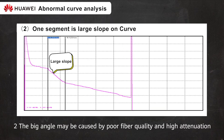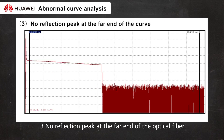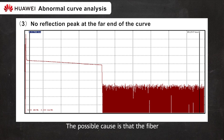2. The big angle may be caused by poor fiber quality and high attenuation, or the optical cable being too tight, or the optical cable fiber not being long enough. 3. No reflection peak at the far end of the optical fiber. The possible cause is that the fiber may be broken, the end is not clean, or it is damaged.